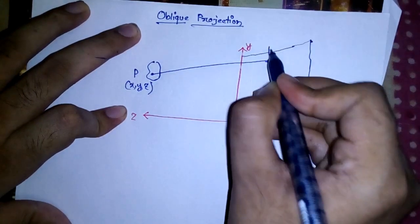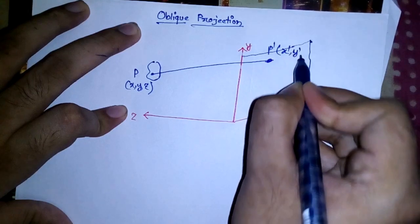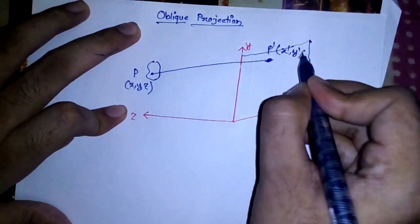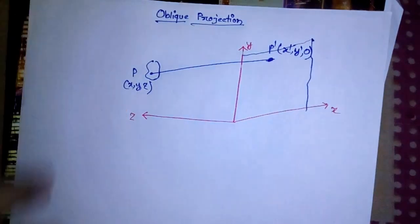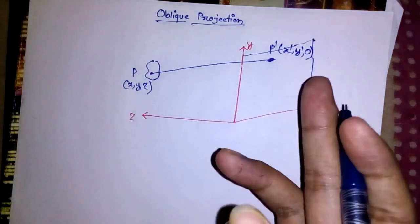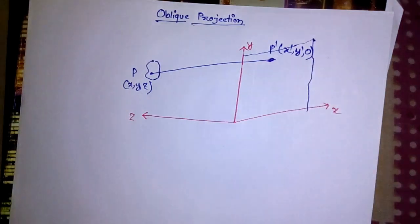Let's call it as P dash, and this is X dash, Y dash, and Z value is 0 because it is at the XY plane. Now the question is how to compute this X dash Y dash value.